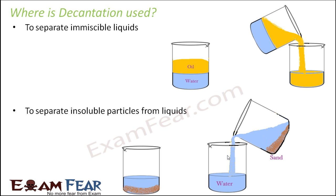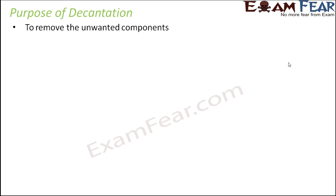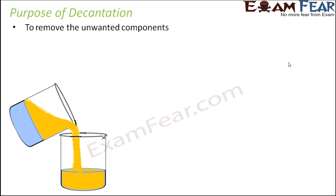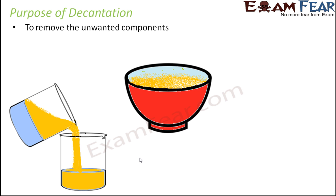The liquid poured into another vessel is not necessarily always the desired one. For example, clean water is the desired substance when separating muddy water, but in another case the oil being poured away might be dirty or unwanted oil. Decantation is about separating two components of a mixture — the purpose could be to remove unwanted components, such as harmful or undesirable oil spilled over a glass of water.